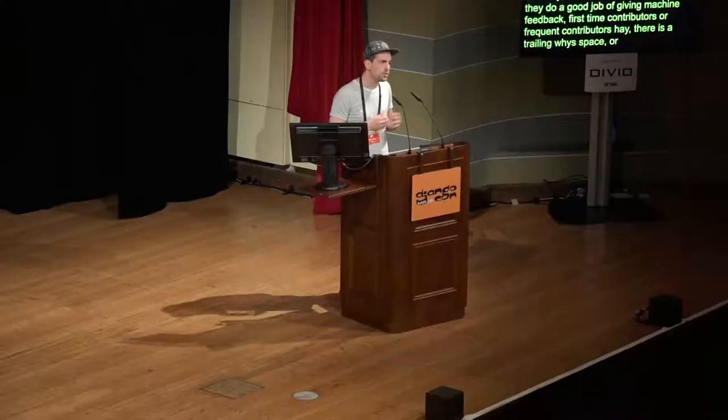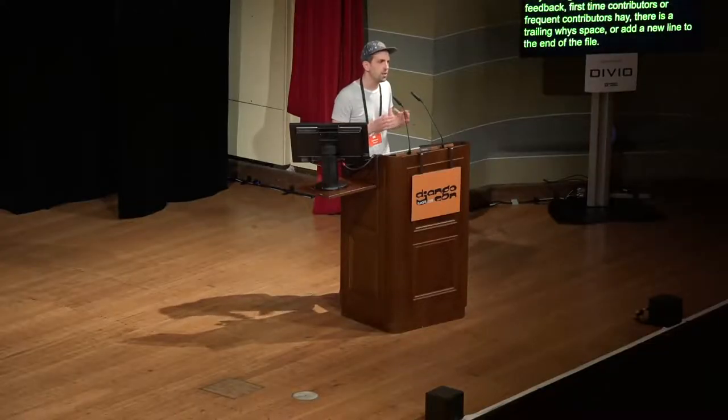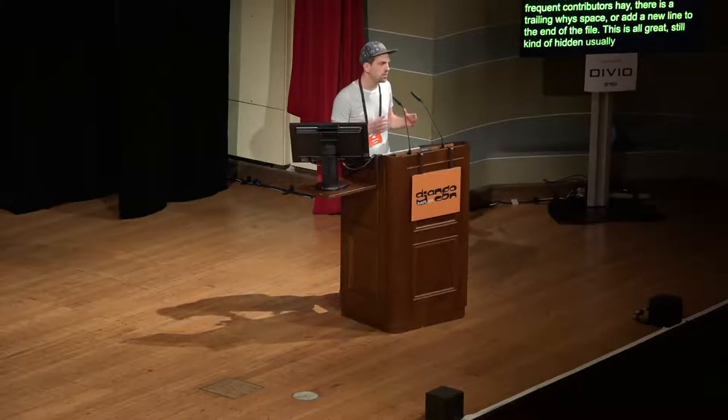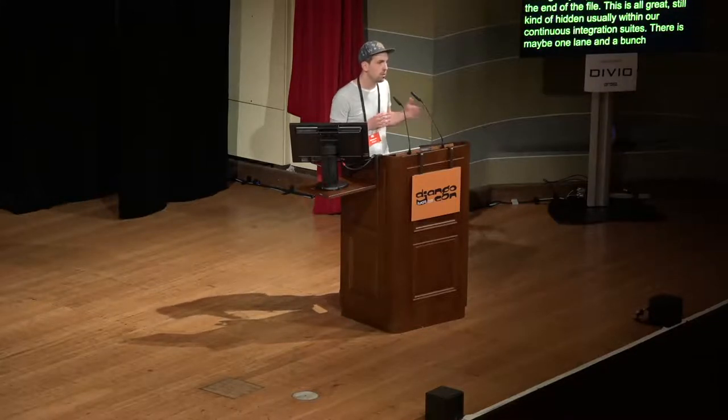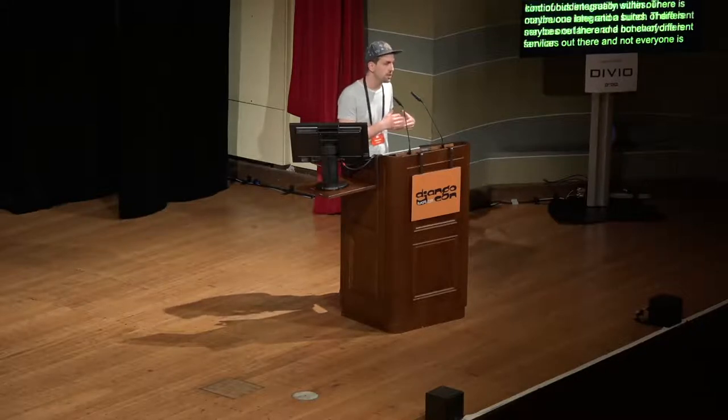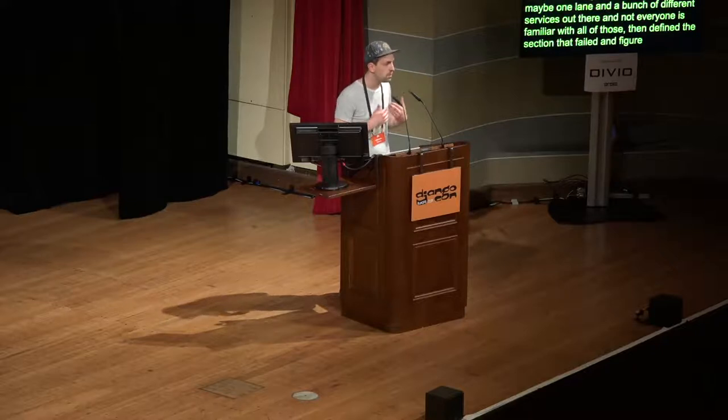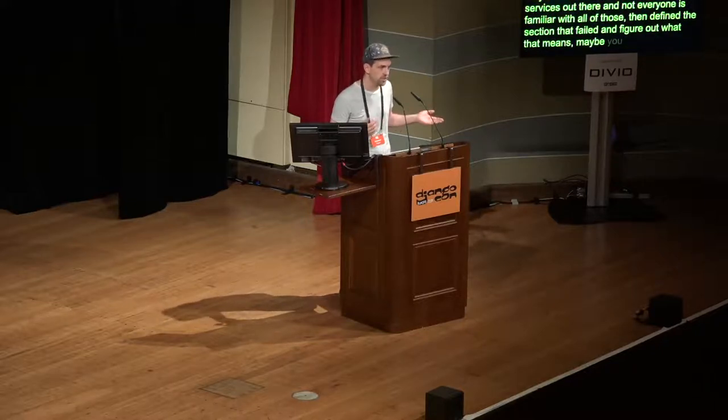Luckily, something we heard earlier this morning, the machines are taking over. Over time, we built a lot of great linters that help us do that job. But they're still, even though those do a really good job of giving you machine feedback, which is a bit softer to first time contributors or frequent contributors to tell them, hey, there's maybe a trailing white space that you want to get rid of, or please add a new line to the end of the file. This is all great, but they're still kind of hidden within our continuous integration suites. There's this one link to the Travis suite, or maybe CircleCI, and there are a bunch of different services out there. Not everyone is familiar with all of those. Then you have to find the section that actually failed, and you have to figure out what that means. Maybe you're not particularly familiar with that linter.